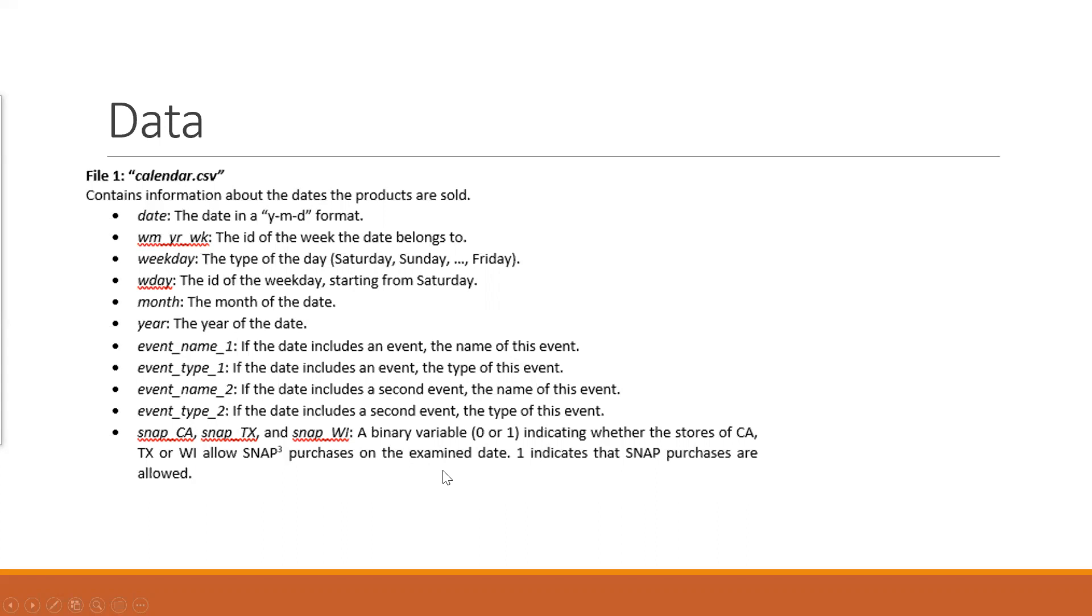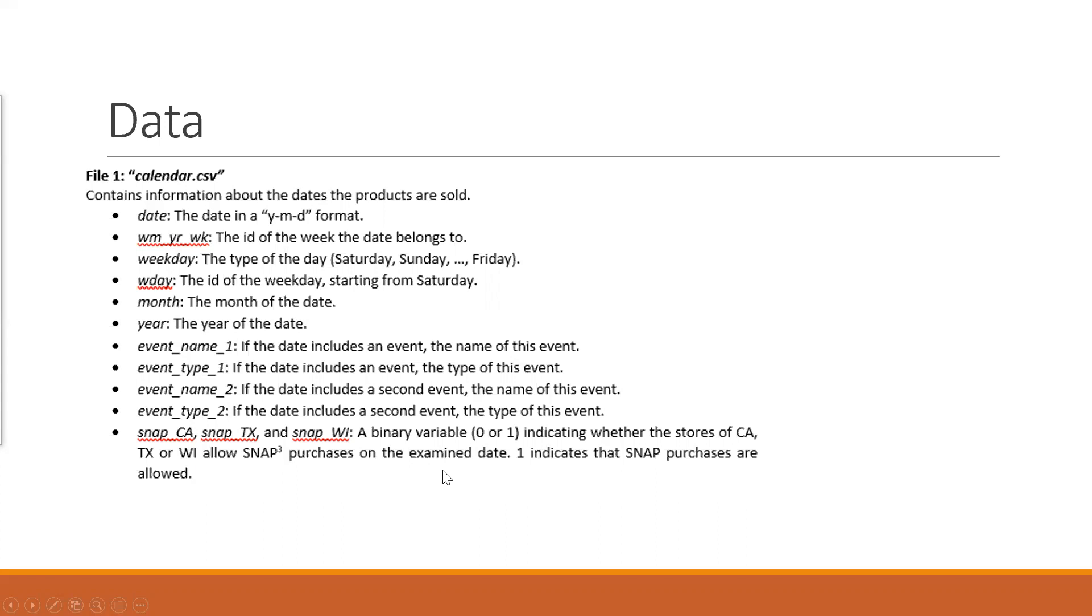I need to check what's a SNAP purchase. And then they have provided the prices. I think this is additional and different from earlier competitions. They also provide the pricing information of the products. We have the store item, we have the week, and we have the sale price. The price of the product for a given week for store. And of course, the price is averaged across seven days per week.